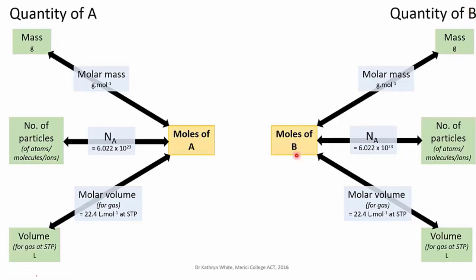So on the left hand side of the page, I have the conversions that will let me move between mass, particles, volume, and moles of A. And on the right, I have the same thing for B. And how do we relate A and B to each other?